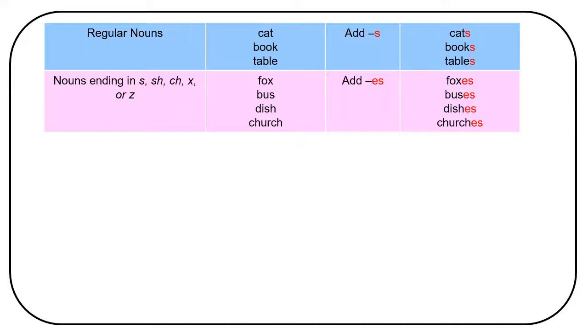The reason for this is that you have to have an extra syllable on the end. You can't just say fox. You have to say foxes. So you need the e in there to make the extra syllable.